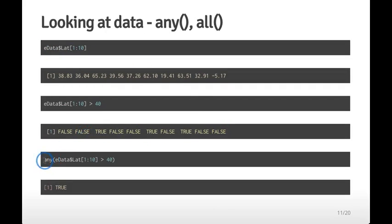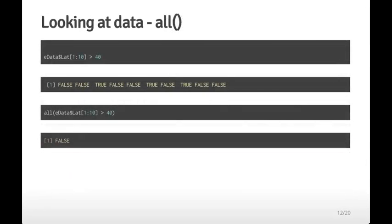The all() command checks if every value has the same property. Applying all() to the logical vector of whether latitude is greater than 40 returns false, because many values are false. The only way all() returns true is if every single value in the vector is true. These two functions, any() and all(), let you evaluate whether particular patterns affect all of the variables or even just one of them.